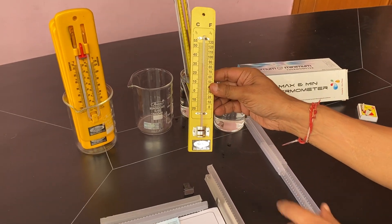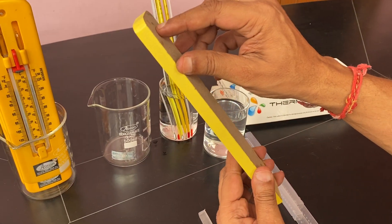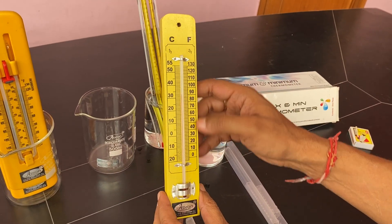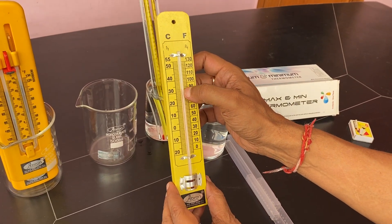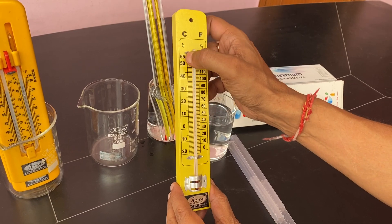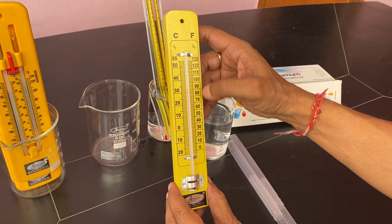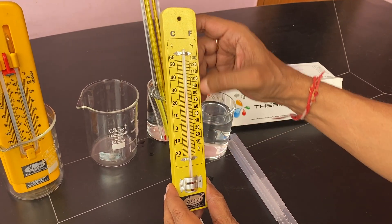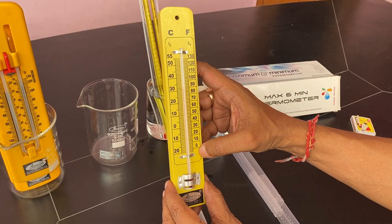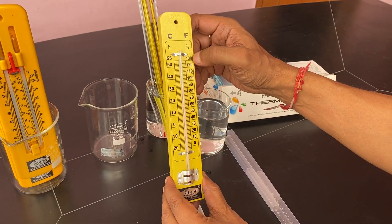This is the Abron Exports wall thermometer. It has a hole to hang on the wall and displays temperature in Centigrade from minus 20 to 55 degrees, and in Fahrenheit from zero to 130 degrees.